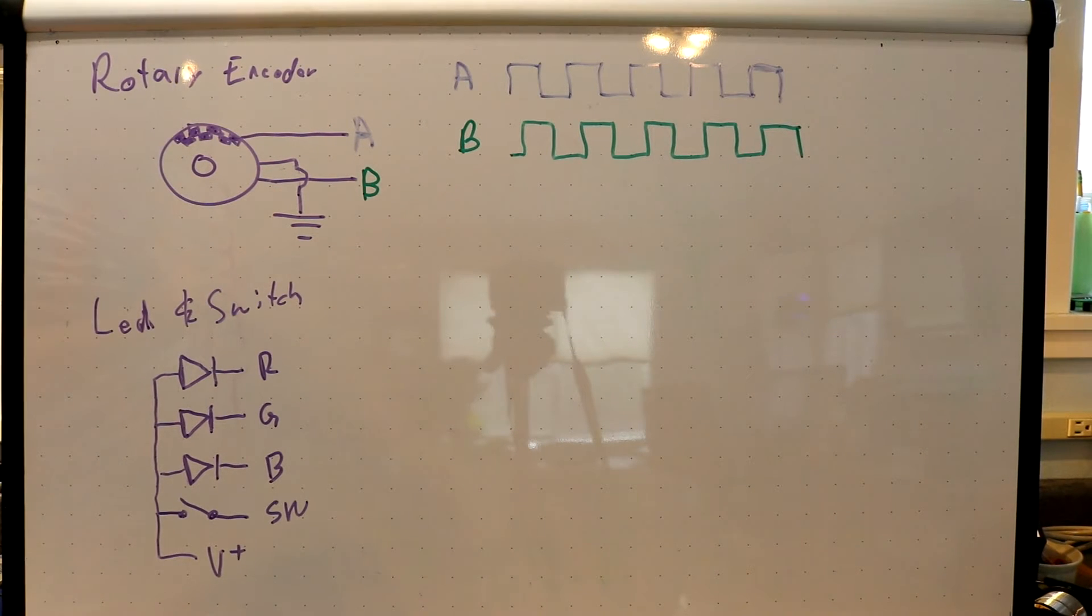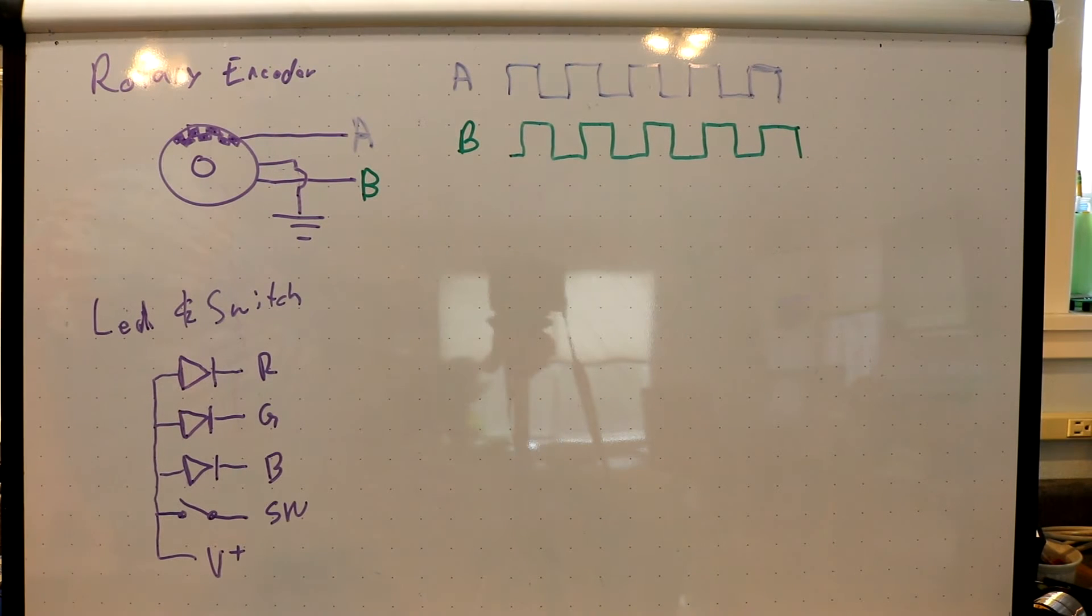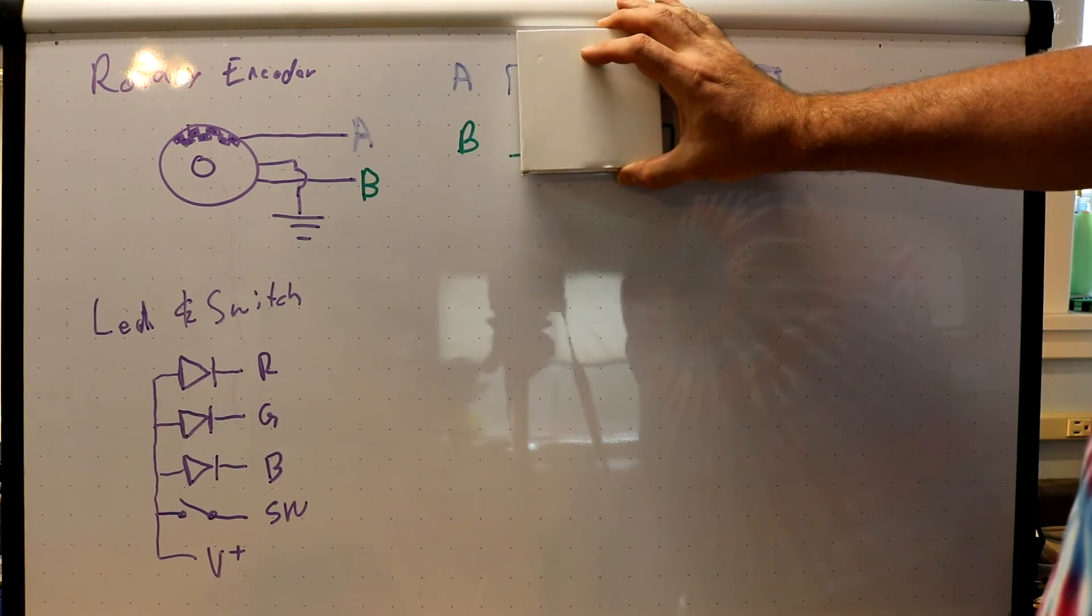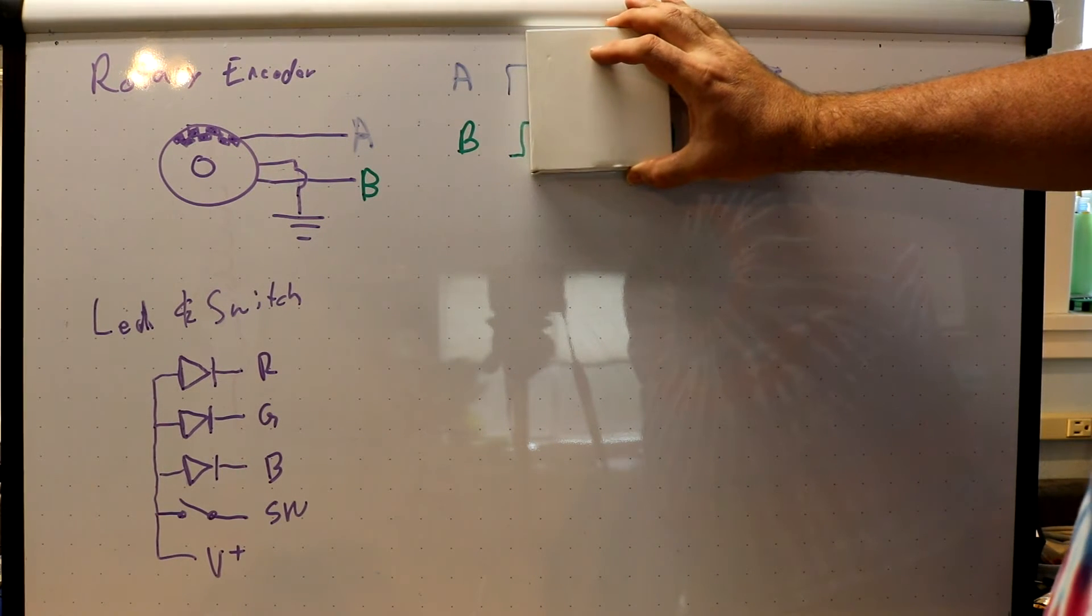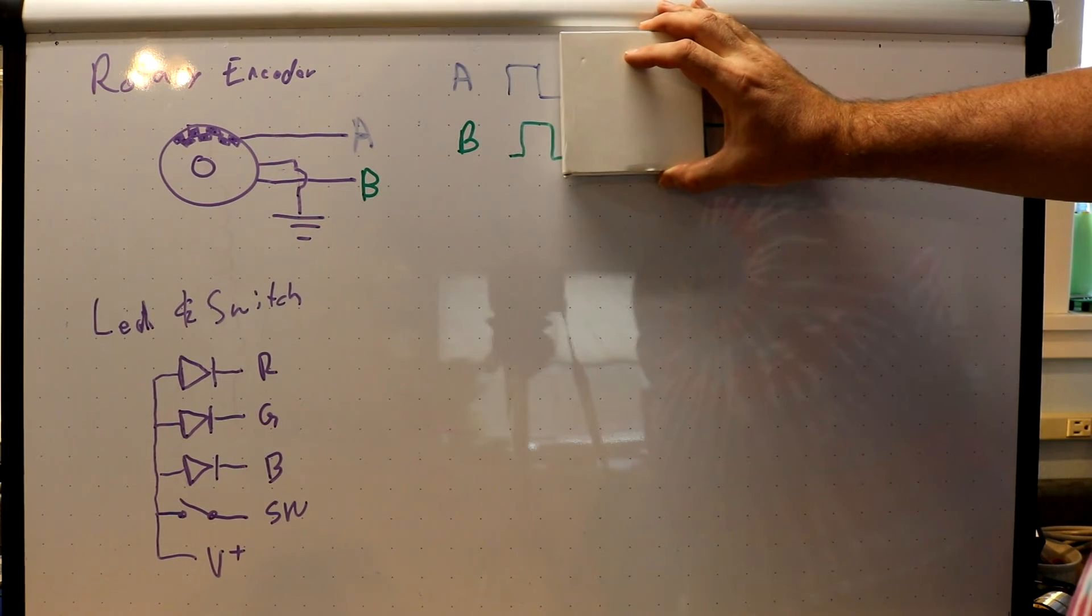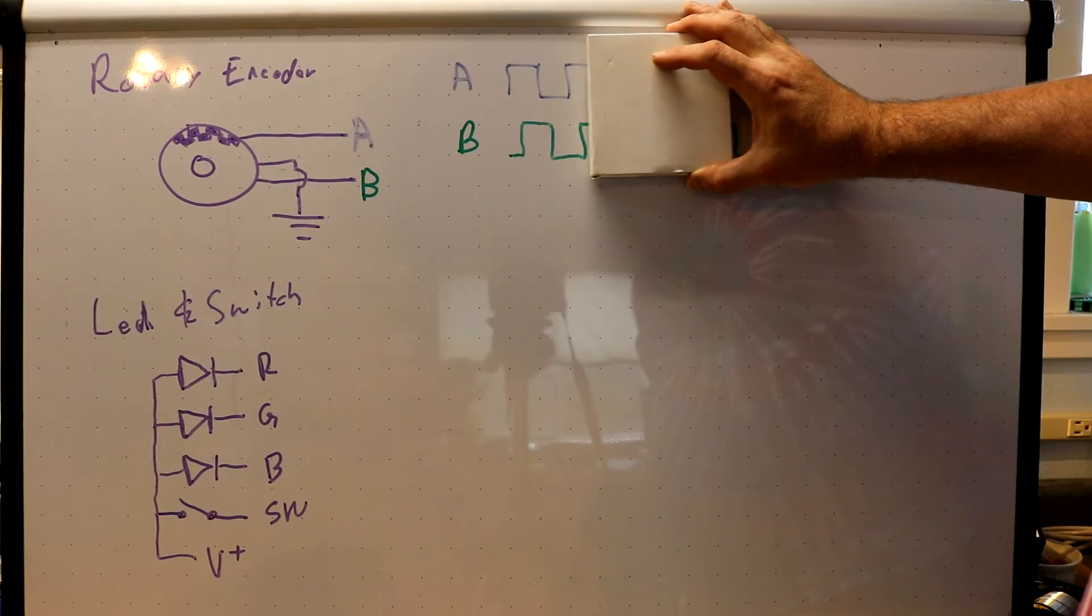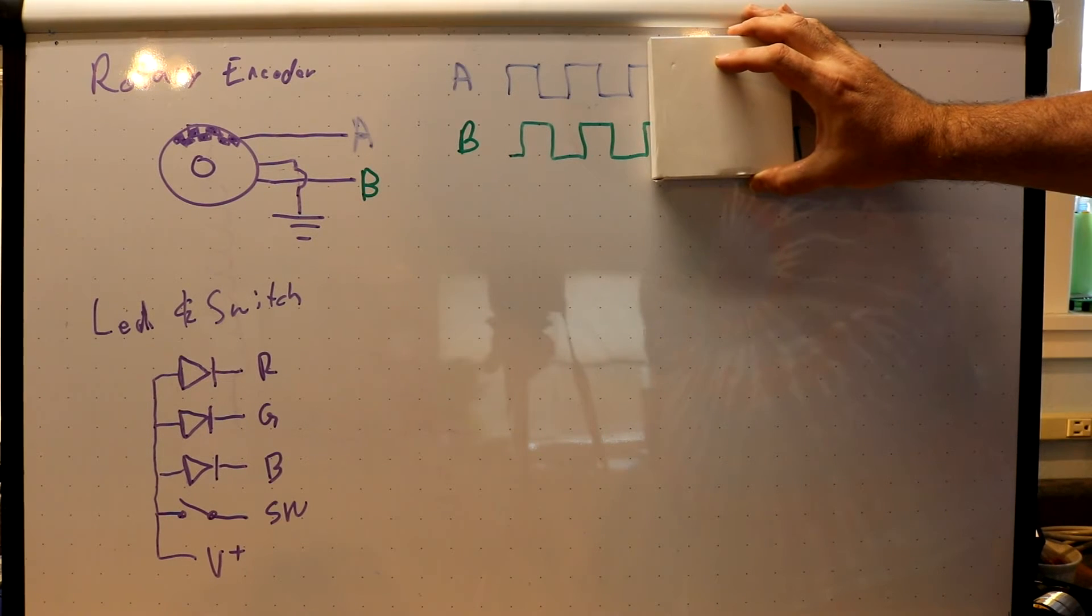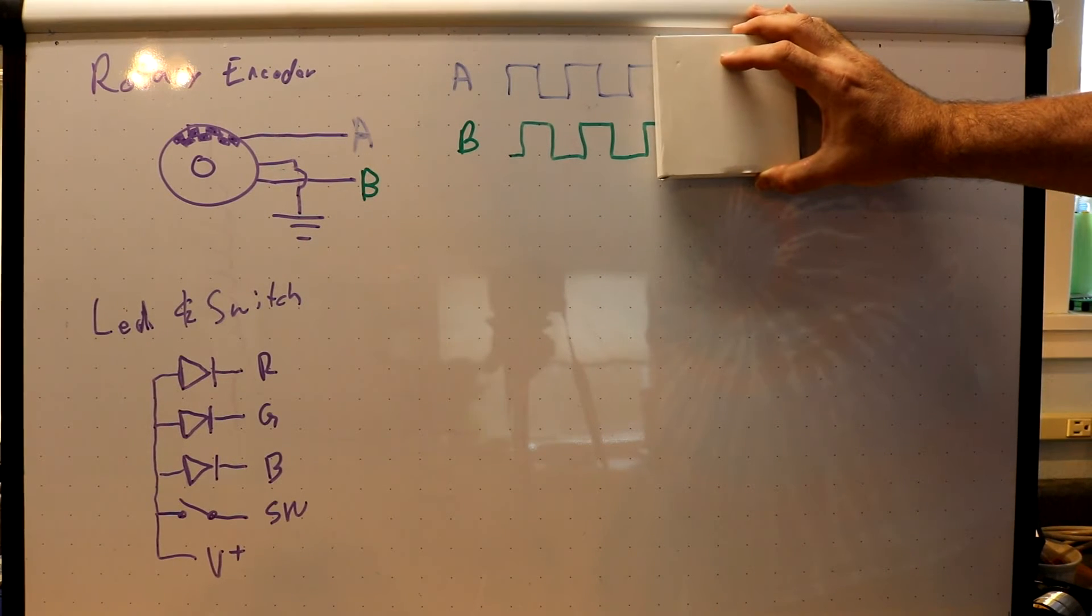Now if we look at this, we cannot tell an absolute position of this encoder since it's just outputting this pulse stream, but we can tell direction. As you turn it, the two signals A and B are offset slightly out of phase. As it's turning, you'll see A go up, then you'll see B go up, then you can see A go down, then B go down, then A goes up, B goes up, A goes down, B goes down. That tells you you're turning in one direction.